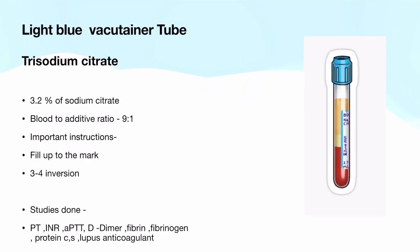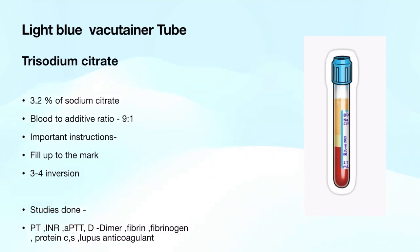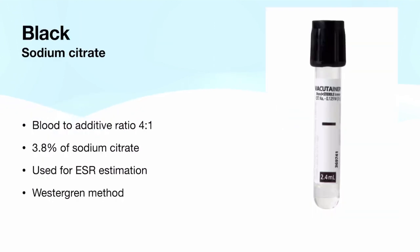The next tube is the light blue vacutainer. This came in NEET SS also. It contains trisodium citrate — 3.2% sodium citrate. This is very important; the 3.2% you have to remember. This question came in NEET SS 2019 or 2020. The blood to additive ratio is 9:1 — also very important. You have to fill it to the mark and invert it 3 to 4 times. It is used for PT, INR, APTT, D-dimer, fibrinogen, fibrin, Protein C, Protein S, and lupus anticoagulant.